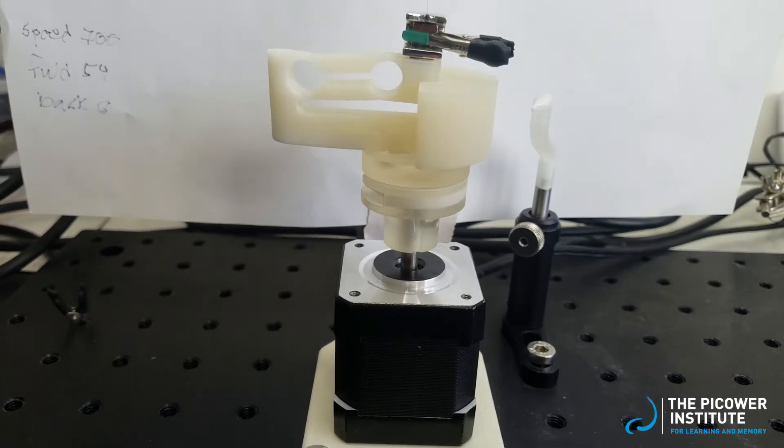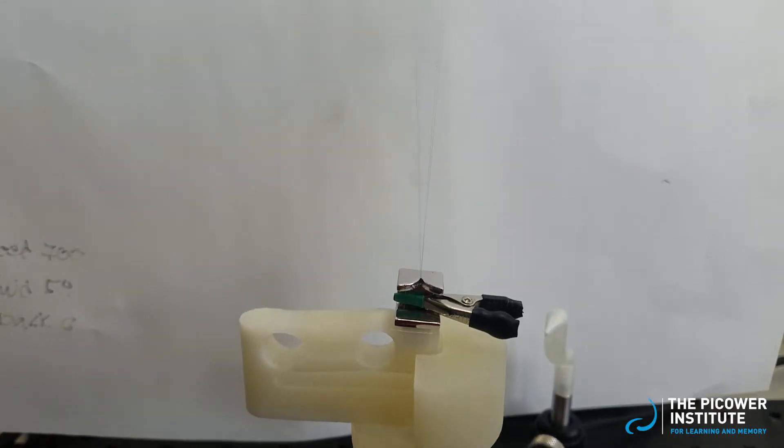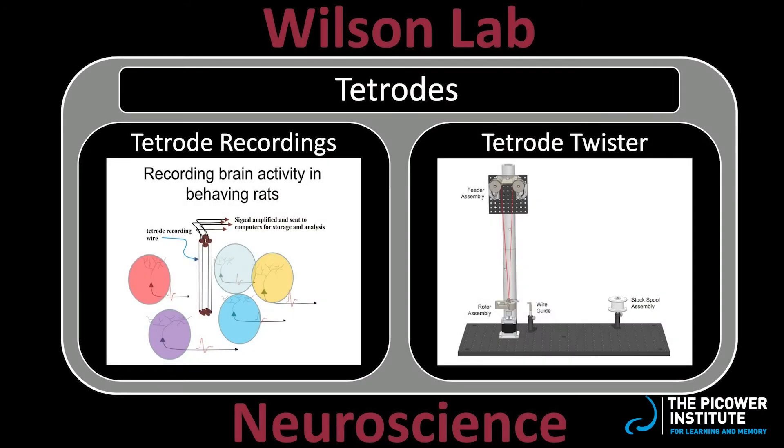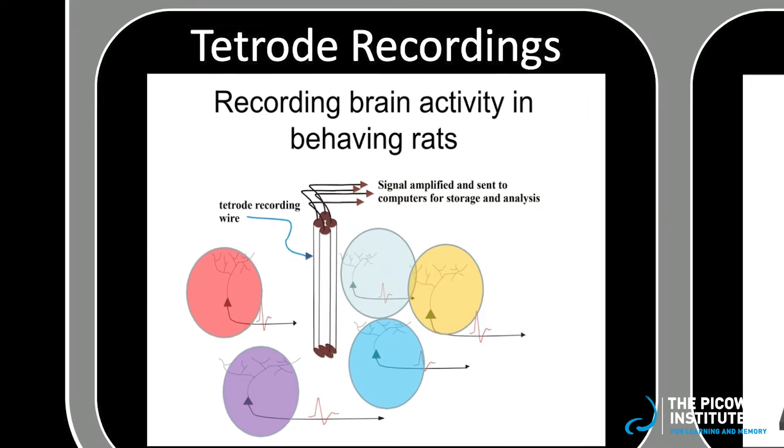To study the relationship between brain activity and behavior, we use tetrodes to record the electrical signals from neurons. Tetrodes are electrodes with four channels that can simultaneously record from many different neurons by comparing the electrical activity across the four channels.